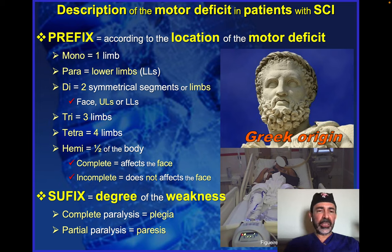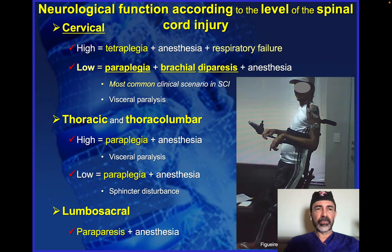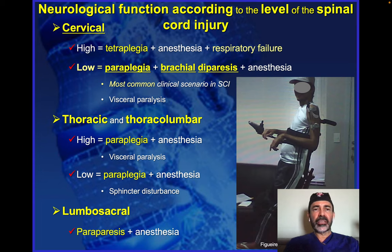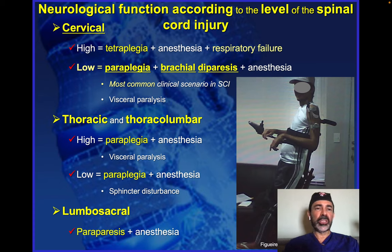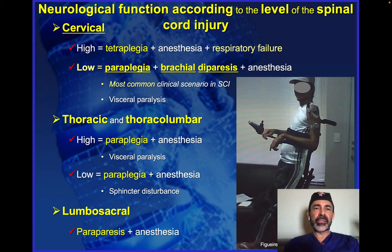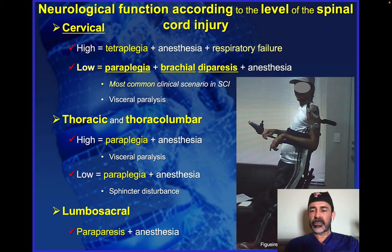We combine it with the suffix, which means the degree of weakness. Complete paralysis of that limb uses the suffix '-plegia'; partial paralysis uses '-paresis'. Going back to neurological function according to the level of spinal cord injury: when a patient has injury to the high spinal cord and it is a complete injury, he develops tetraplegia with respiratory failure — usually fatal. When the patient has injury to the lower cervical spinal cord, the most common event, the patient has paraplegia with no movements of his lower limbs, with brachial paresis — weakness of his upper limbs, some movements but not complete — plus anesthesia. Thoracic or thoracolumbar injury causes paraplegia; lumbosacral injury can also cause paraplegia with some movements preserved.